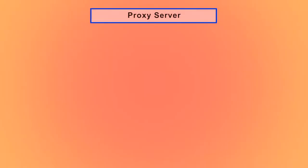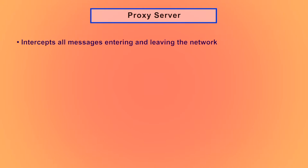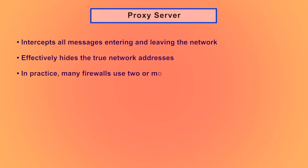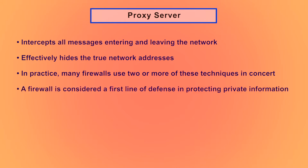A proxy server intercepts all messages entering and leaving the network and effectively hides the true network addresses. In practice, many firewalls use two or more of these techniques in a collaborative manner. It should be noted that a firewall is considered a first line of defense in protecting private information; for greater security, data needs to be encrypted.